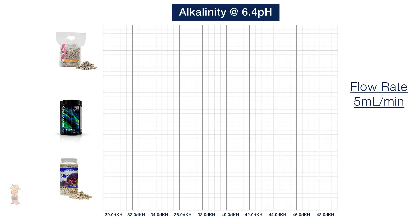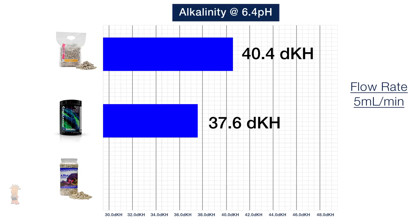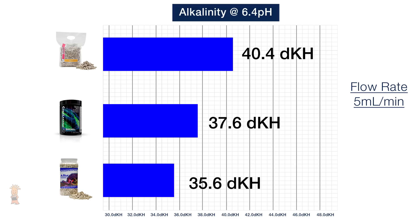Before we get into the results for this test, let's look at these three media types on the table. We can see the Two Little Fishies Reborn media is absolutely small bits of porous coral skeleton in a variety of shapes. The CaribSea ARM and Coral Lazarus are evenly shaped and sized aragonite media, yet the Coral Lazarus has a slightly smaller granule size. Let's look at the data for all three reactor medias where the reactor pH was set to 6.4 with a flow rate of 5 mils per minute. After a full 24 hours of each media running at this low range pH, we see the Two Little Fishies Reborn media max alkalinity concentration test at an average of 40.4 dKH. Brightwell's Coral Lazarus shows an average reading of 37.6 and CaribSea ARM coarse media tests at an average of 35.6 dKH.